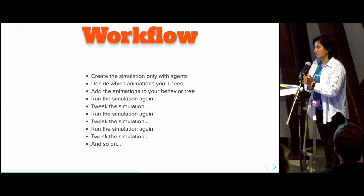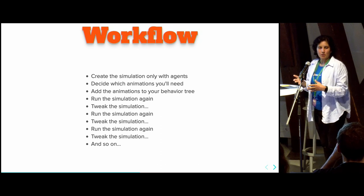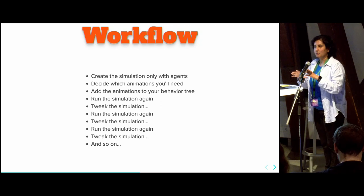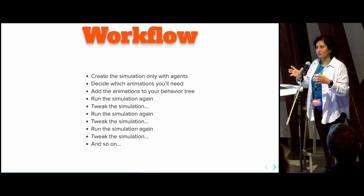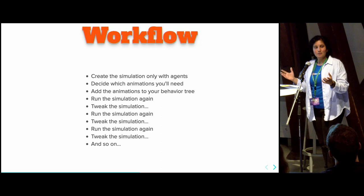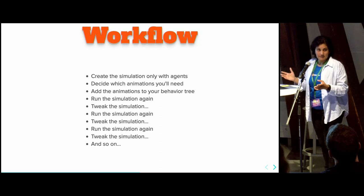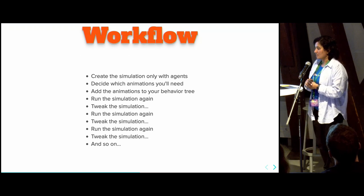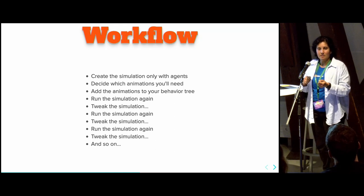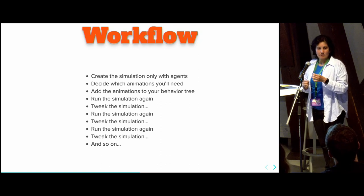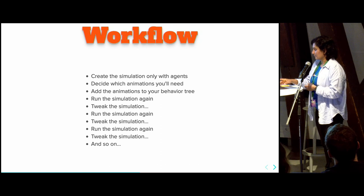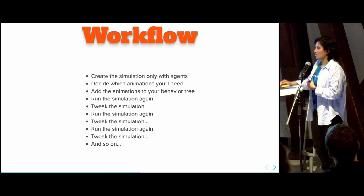So what do you do? First, when you create a battle scene, start with only agents — don't use animations yet. Set up how you want the movement between the agents, and if you're happy with how it overall looks, then decide which animations you'll need. Add the animations to your behavior tree, rerun the simulation, and start tweaking. You may find you need more animations, which is fine — add them, rerun, tweak. Creating a crowd simulation is quite complex and requires a lot of tweaking to get a beautiful, nice simulation.